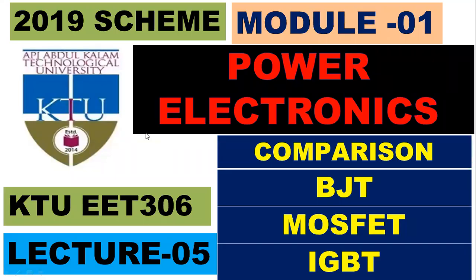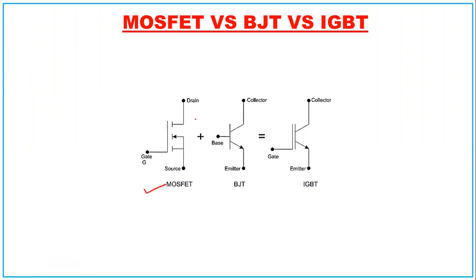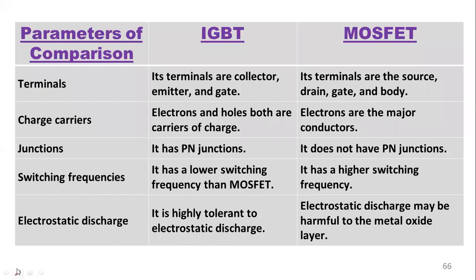In this session we will summarize what we have seen in the first four lectures. This is a comparison of BJT, MOSFET, and IGBT as mentioned in the syllabus. You should be aware of how they are different. MOSFET has gate, source, and drain; BJT has collector, base, and emitter; and IGBT also has collector, base, and emitter. MOSFET plus BJT together form the IGBT.